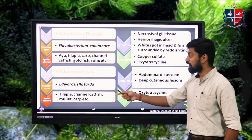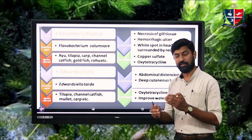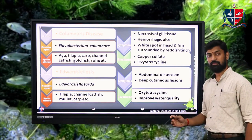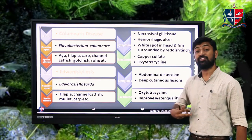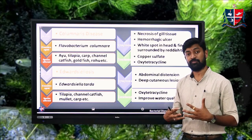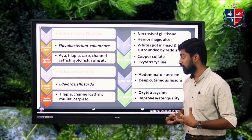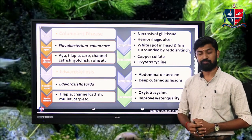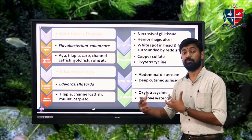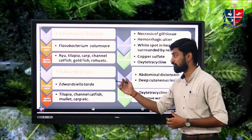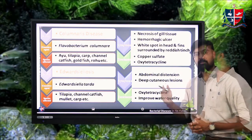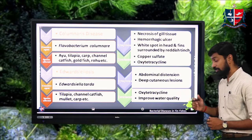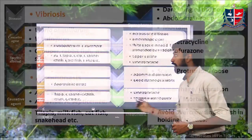Another bacterial disease is advaciliosis, caused by Aeromonas sobria (Advaciela tabda). It mainly affects tilapia, channel catfish, mullet, and carps. Major symptoms include abdominal distension, abdominal dropsy, and deep cutaneous lesions occurring in the abdominal area.